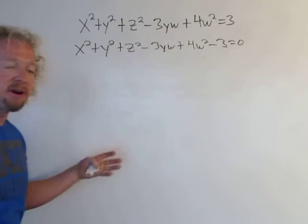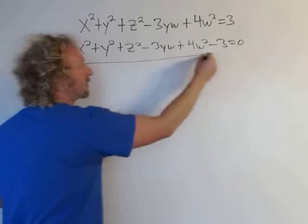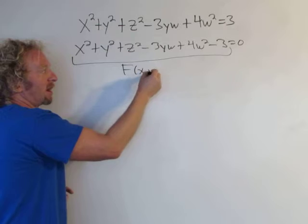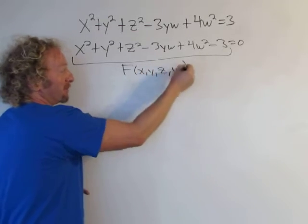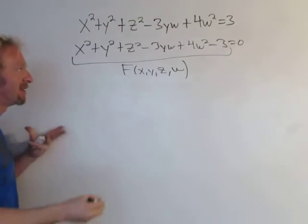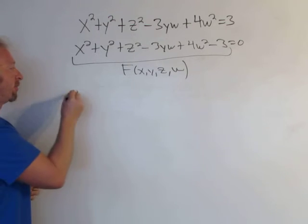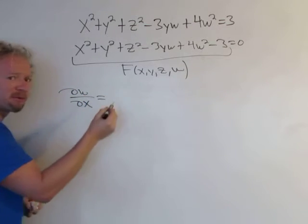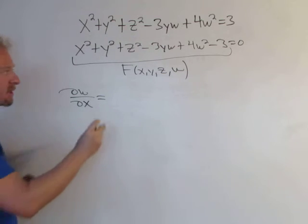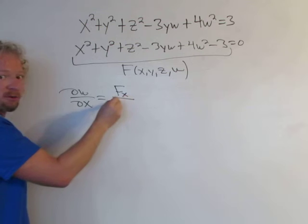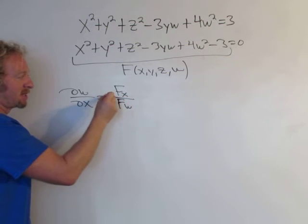In the formulas that follow, all of this right here is going to be big F of x, y, z, w — so it's a function of four variables. Let's go ahead and find del w / del x. The formula for this is the partial of big F with respect to x over the partial of big F with respect to w, and you have a minus sign.